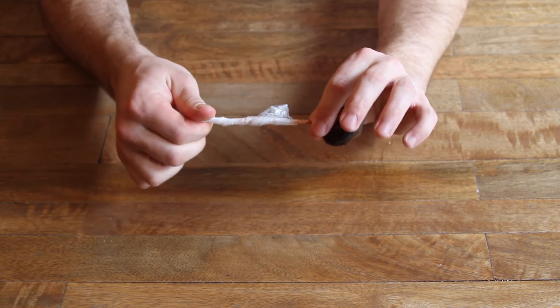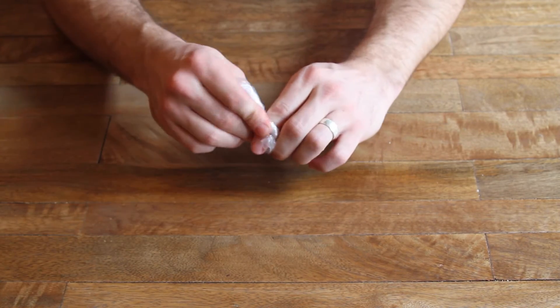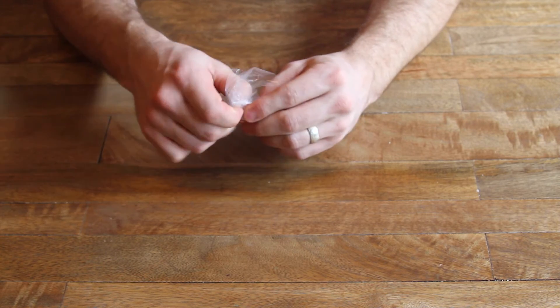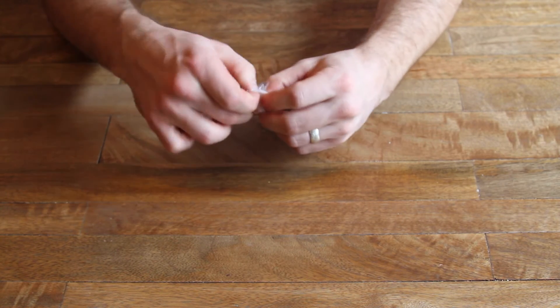Once you've got that tied up nice and tight, make a loop around your finger and then push the excess through that loop to create a simple knot.